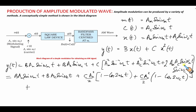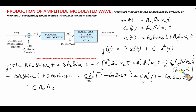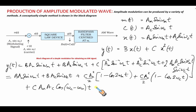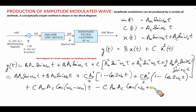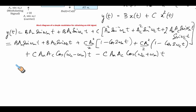For the product term 2·sin(ωm·t)·sin(ωc·t), we apply the identity 2·sinA·sinB = cos(A−B) − cos(A+B), giving c·Am·Ac·cos(ωc − ωm)t minus c·Am·Ac·cos(ωc + ωm)t.